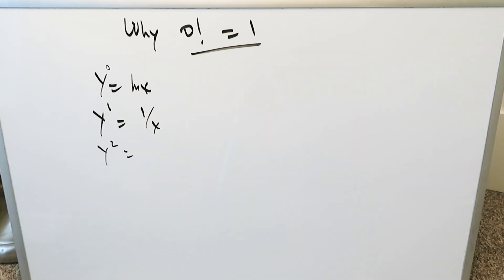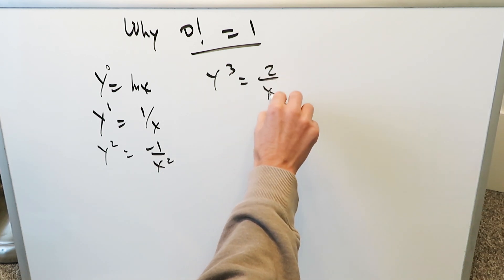Your 2nd order derivative, you can use a quotient rule or the power rule, but when you do this you get minus 1 over x squared. The 3rd order derivative is not hard. You're doing the derivative of this, power rule, quotient rule, but you get 2 over x cubed.